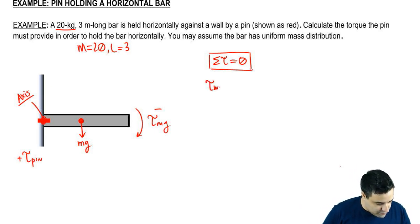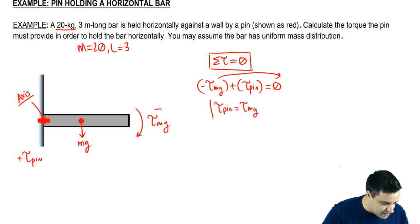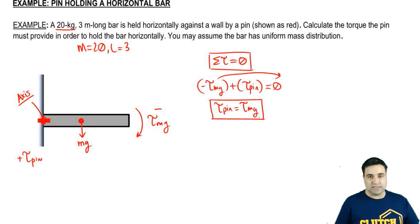So we're going to write torque of Mg, negative, plus torque of pin, positive, equals 0. This gives us that. I'm going to send the negative to the other side. Torque of pin equals torque of Mg. This should make sense. All we're doing is getting these two guys to cancel each other out.